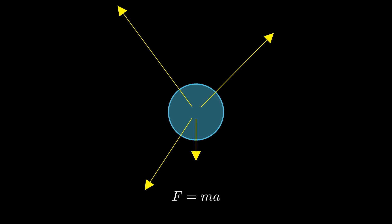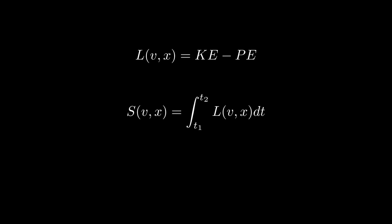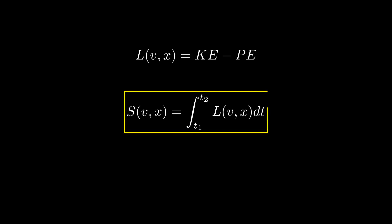To start off, we create a new function where we subtract the potential energy from the kinetic energy. This function is called the Lagrangian. Then, using the Lagrangian, we create a new function which we call the action, which is the integral of the Lagrangian with respect to time, over the time interval where we want to calculate the motion of the object.